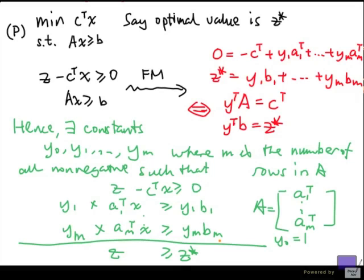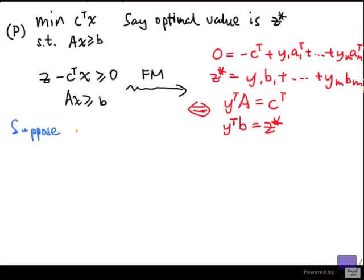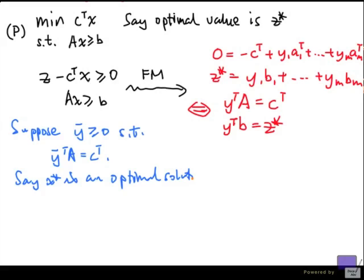Let's make another observation here. Suppose I have a y bar greater than equal to 0 such that y bar transpose a is c transpose. Say x star is an optimal solution to p. Then y transpose a x star is the same as c transpose x star. But c transpose x star is the objective function value of our optimal solution x star. So this has to be z star.